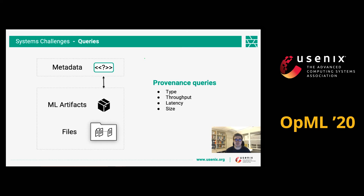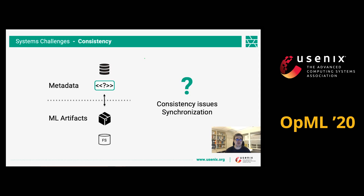Throughput and latency are also important — how fast can we answer queries and how fast our metadata itself changes. All of these are important for designing the metadata extraction mechanisms. Another challenge is the consistency between metadata and data itself. If the artifacts are stored on a file system and the metadata is stored in some database and the two are not connected, there can be synchronization issues, and you would need to implement your own synchronization algorithm — so you would prefer the platform to keep these synchronized.